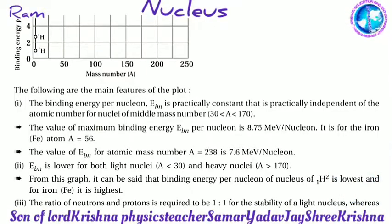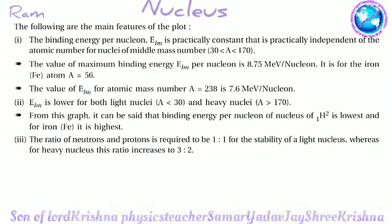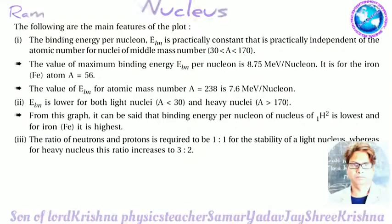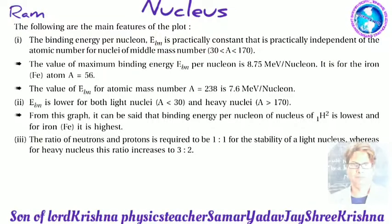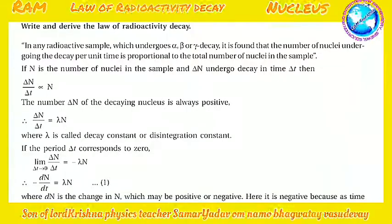Ebn is lower for both light nuclei (A < 30) and heavy nuclei (A > 170). From this graph, the binding energy per nucleon of ¹H² is the lowest and for ⁵⁶Fe it is the highest. The ratio of neutrons to protons required for stability is 1:1 for light nuclei, whereas for heavy nuclei this ratio increases to 3:2.